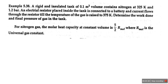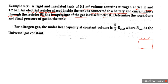The next numerical: a rigid and insulated tank of 0.1 cubic meter volume contains nitrogen at 325 K and 1.2 bar. An electrical resistor is placed inside the tank, connected to a battery, and current flows through the resistor until the temperature of the gas rises to 375 K. The tank is rigid — meaning no change in volume — so this is a constant volume process.